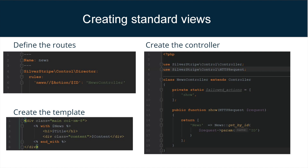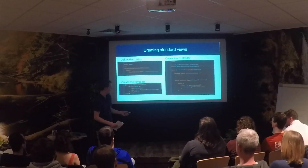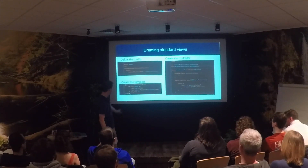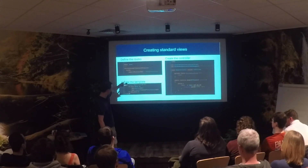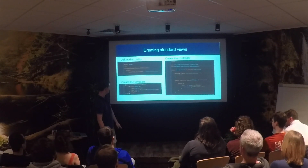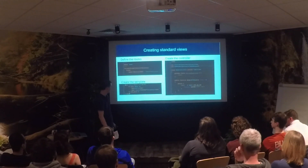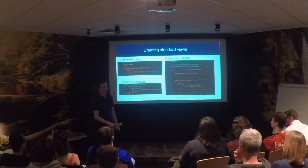You first need to define the route, which is just a simple piece of YAML in SilverStripe. You then create the controller code — there we've got a controller with a single action, show, and that controller will take an optional parameter of ID, which is defined within the URL. So the URL would be news/show and then the news item's ID.